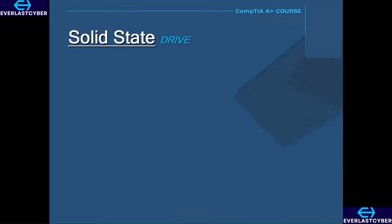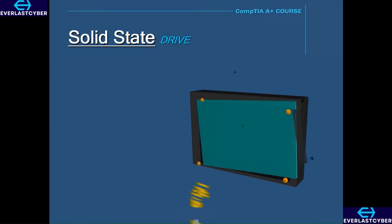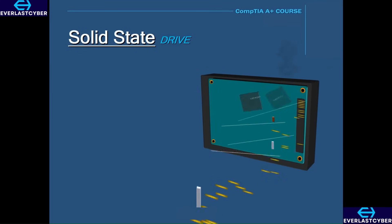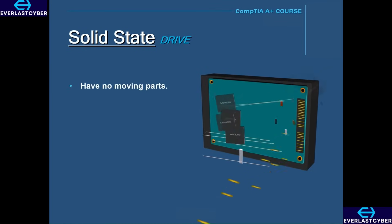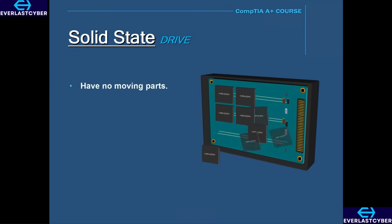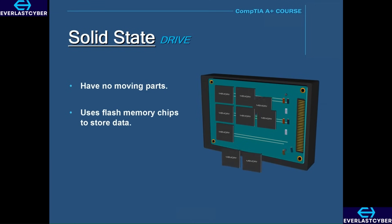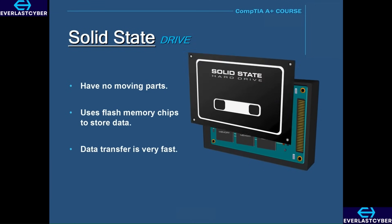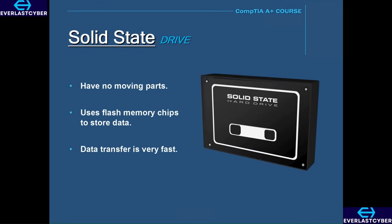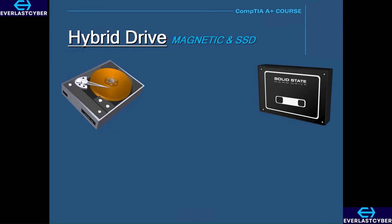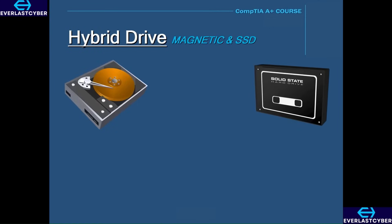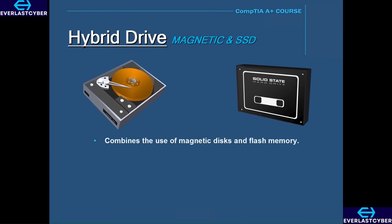Another type of storage device is a solid-state drive. These drives have no moving parts. This type of drive uses flash memory chips to store data, and since it has no moving parts, the data transfer is very fast. There are also drives that combine the use of magnetic disks and flash memory, and these are called hybrid drives.